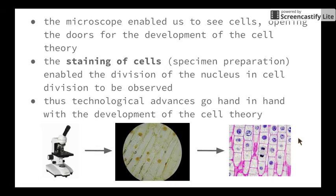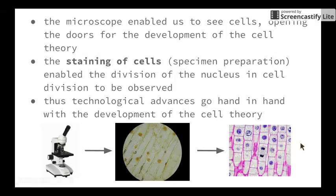That led us to be able to view cell division. What we're seeing here are the different stages of mitosis in different onion cells of the same plant. Therefore, technological advances go hand in hand with the development of the cell theory.